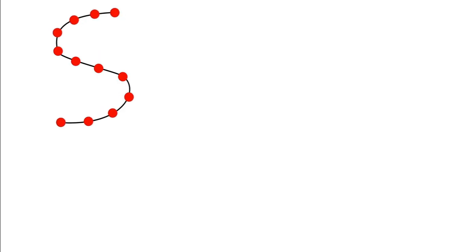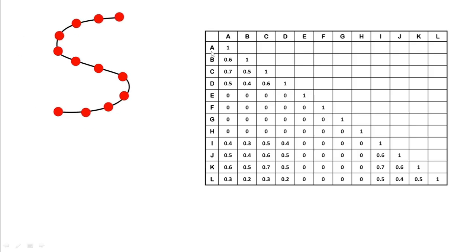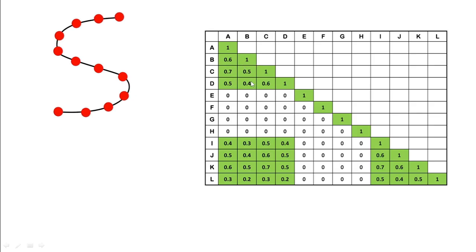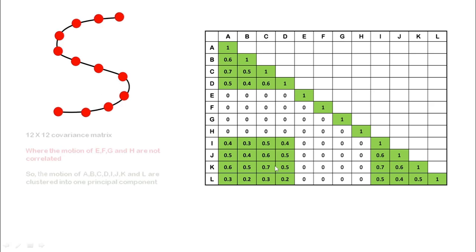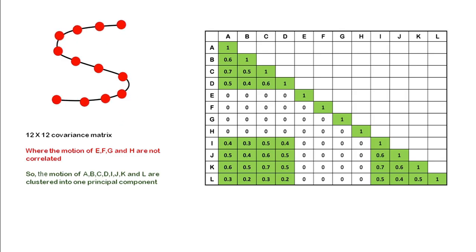To capture this principal component, a covariance matrix is generated. With 12 atoms, the covariance between each possible pair of atoms is calculated, giving a 12×12 covariance matrix. The covariance values for E, F, G, H are zero since their motions are uncorrelated, while the correlated atom pairs show non-zero values. All correlated atoms are then clustered into a principal component.